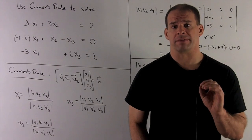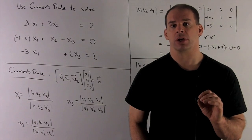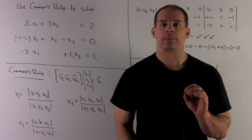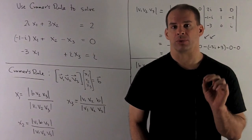Use Kramer's rule to solve the following system of linear equations over the complex numbers. We have three equations, three unknowns.